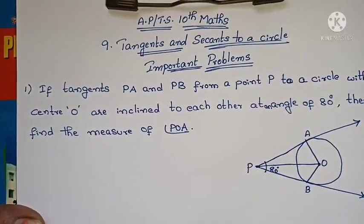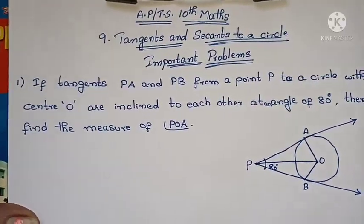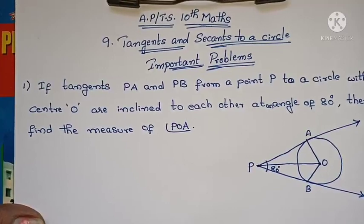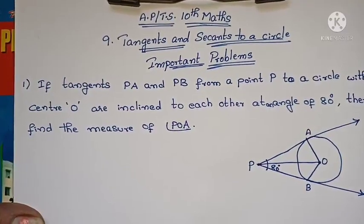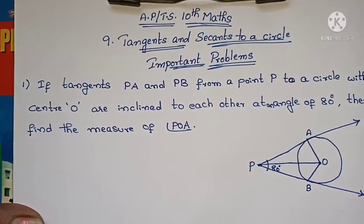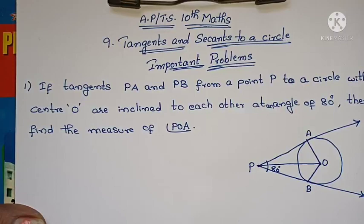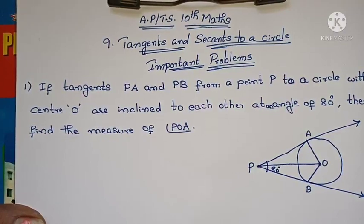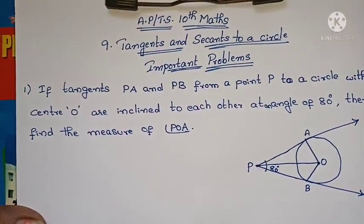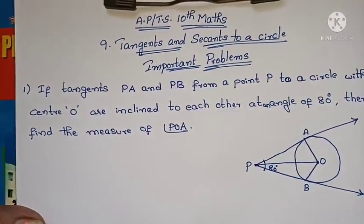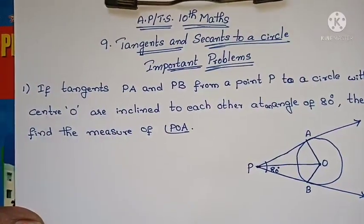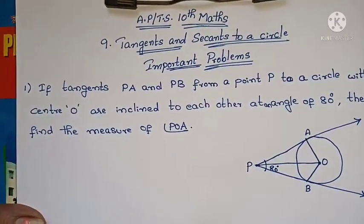Hi, welcome to Pernika Maths. For Andhra and Telangana states, 10th class maths, 9th chapter: tangents and secants to a circle. In this chapter, we will discuss all important problems, important bits, and main concepts together, so this chapter will also serve as a revision.